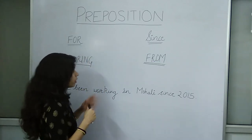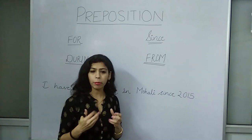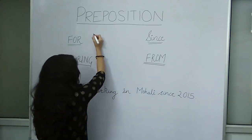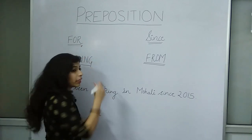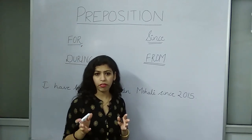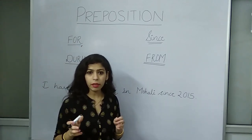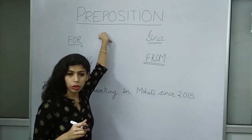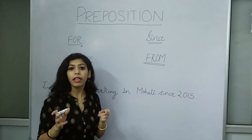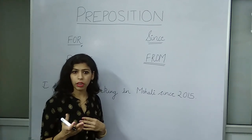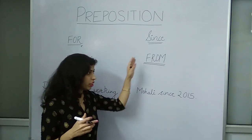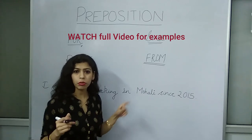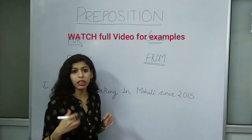For and since — how do we use these? You will have heard that for and since we use with perfect continuous tense. But here, we will not be using it only for perfect continuous tense. I will give you examples of each and everything. Please watch the video till the end so that you get to see the examples.